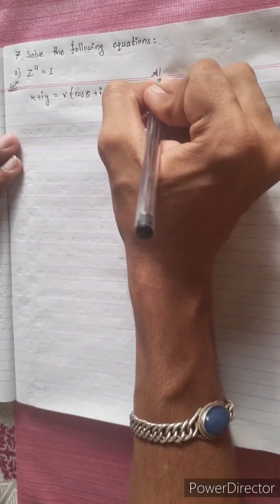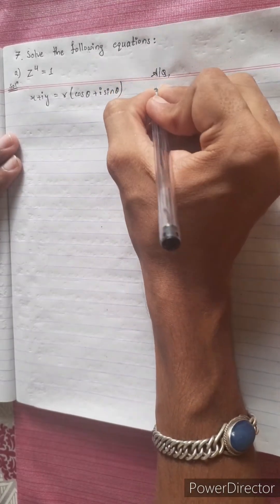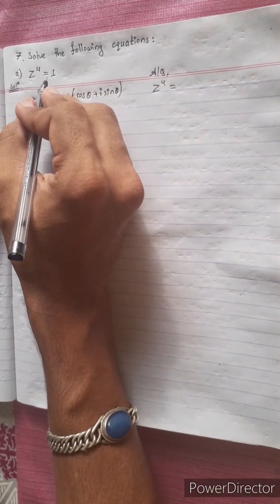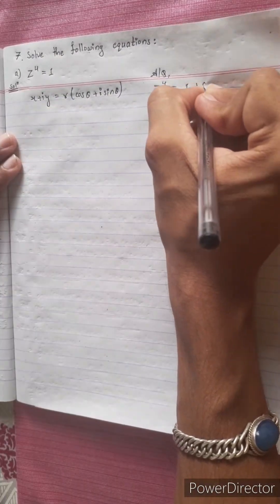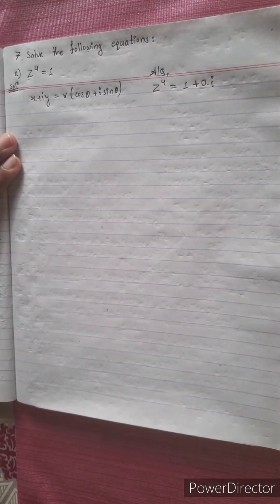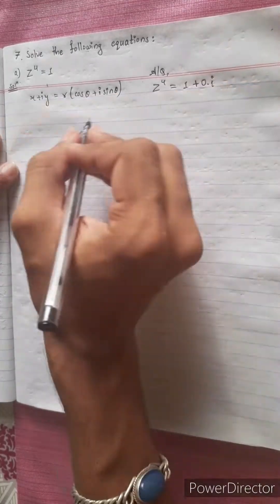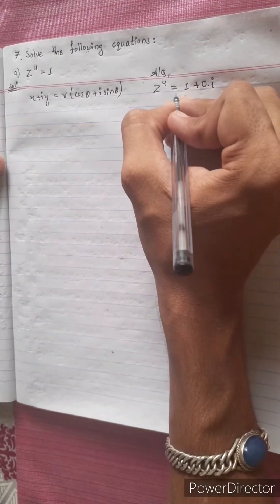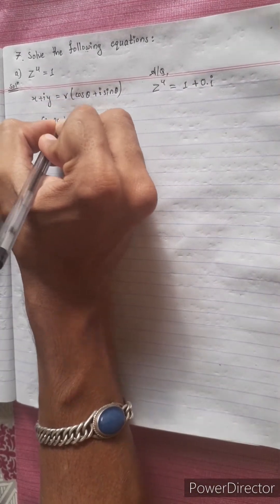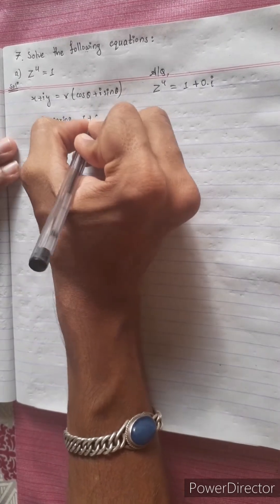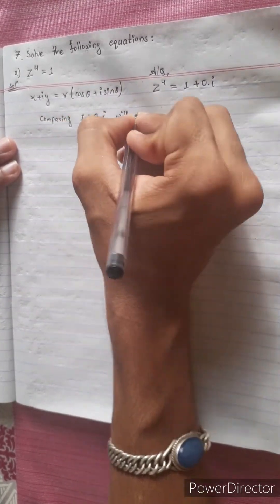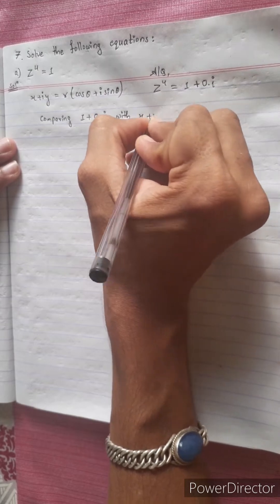According to the question, z to the power 4 equals to 1 plus 0 into i. I am going to start comparing 1 plus 0 into i with x plus i y.